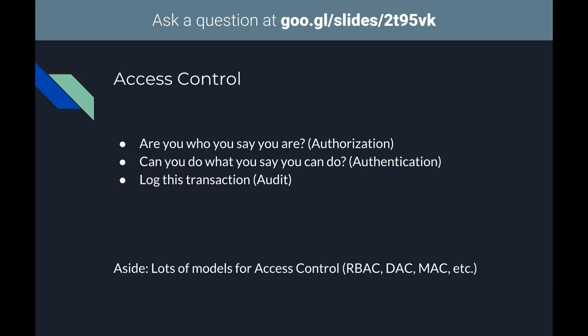Access control generally provides three things. First, authentication — are you who you say you are? If Alan walks up and says he's Andrew, your access control mechanism should say no. Second, authorization — can you do what you say you can? If Jake tries to SSH into the CSG web server, even if he identifies as Jake it won't let him. Third, logging the transaction — a really big deal, especially in the financial industry where you need to show everything was done by the book.